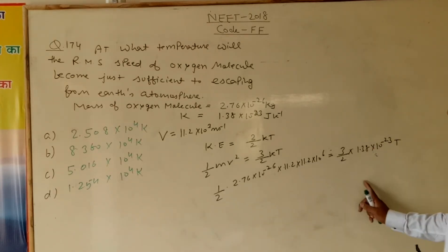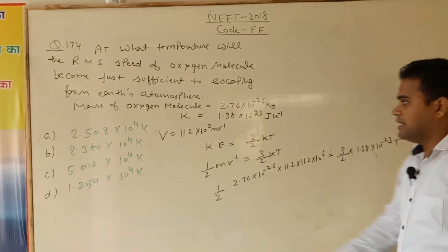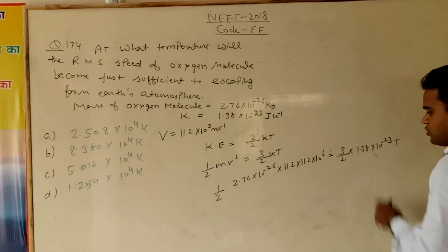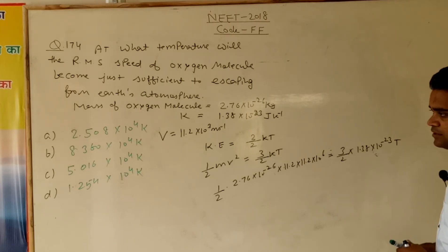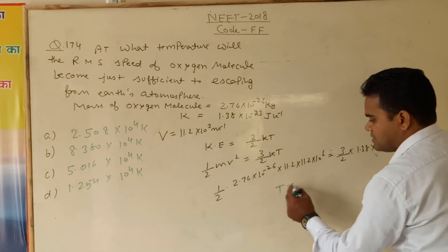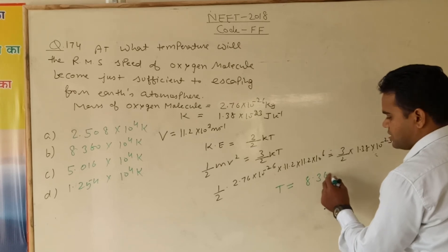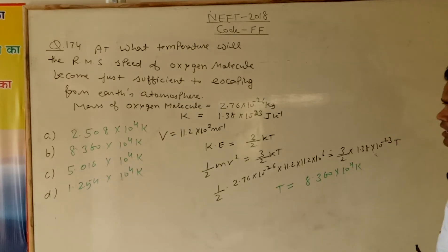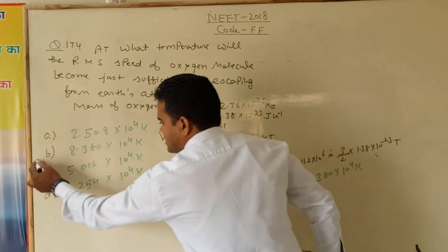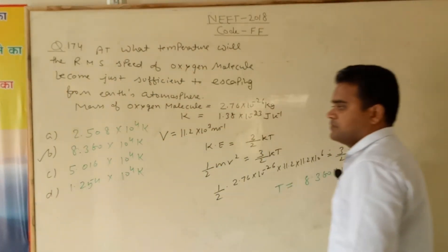So by putting all the values, we calculate the value of temperature. So T, that is equal to 8.360 times 10 to the power 4 Kelvin. So our option B, that is correct. Thank you.